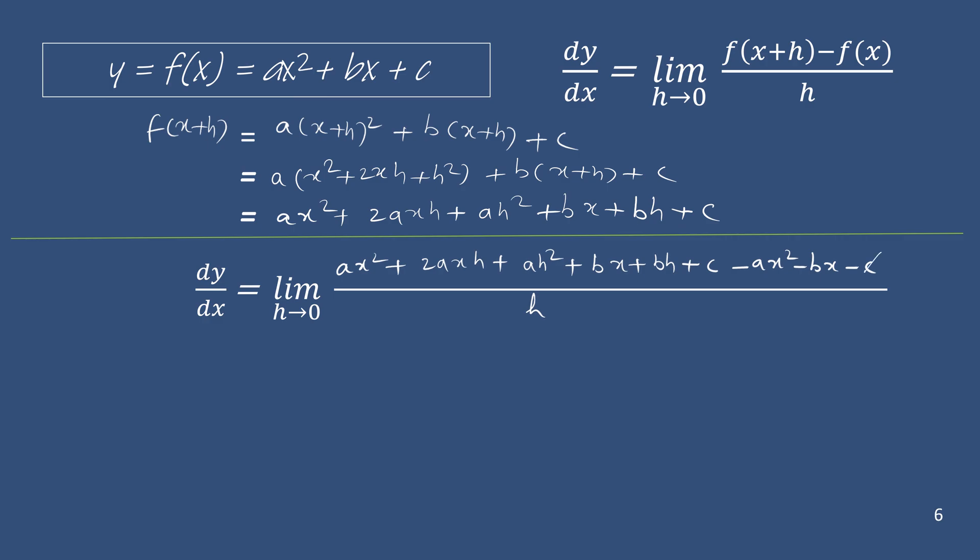Here this minus c cancels this plus c. Minus bx cancels plus bx. Minus ax square cancels this plus ax square.